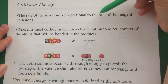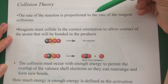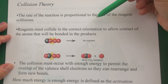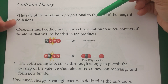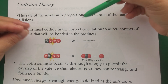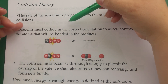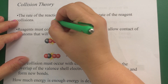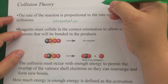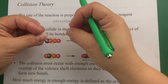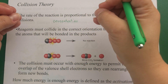The rate of a reaction is proportional to the rate of the reagent collisions. The idea behind collision theory is that for a reaction to happen, the reagents must collide. The more collisions, the faster the reaction can occur overall. This is proportional to concentration — the more you have, the closer together the reagents are going to be, the easier it's going to be for those molecules to collide.